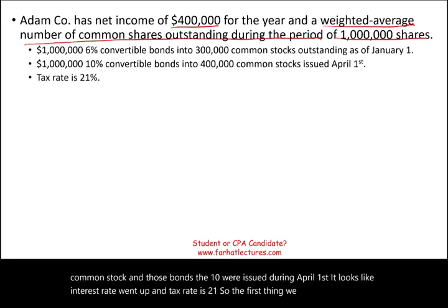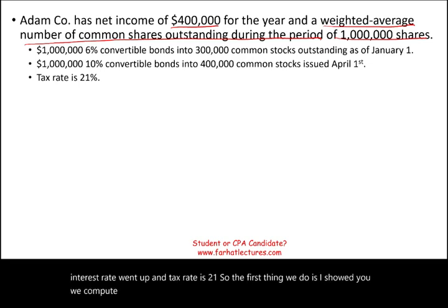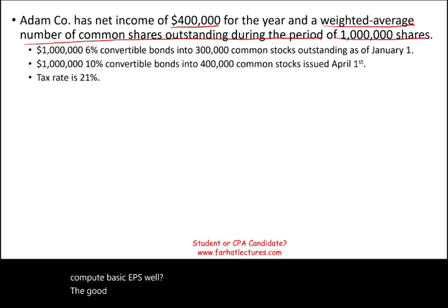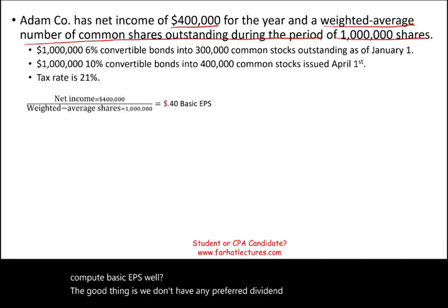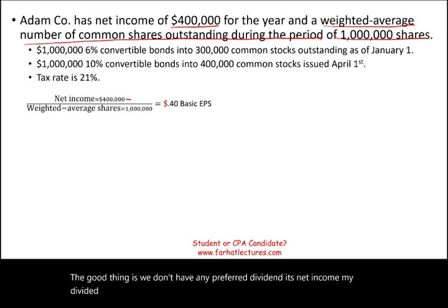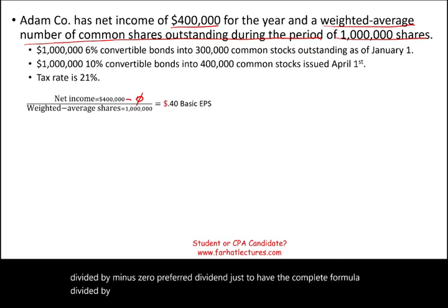The first thing we do is compute basic earnings per share. We don't have any preferred dividend, so it's net income of $400,000 minus zero preferred dividend, divided by the weighted average number of shares of 1 million. Basic earnings per share is 40 cents.